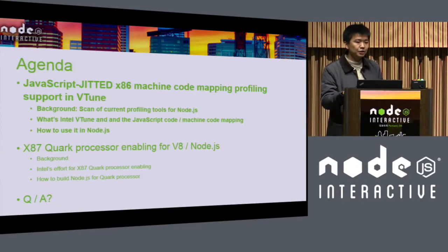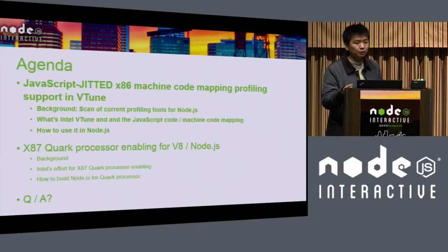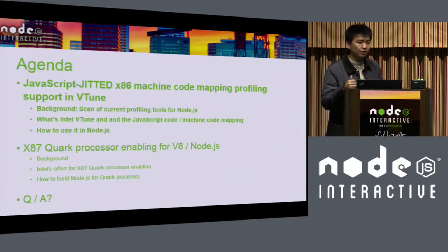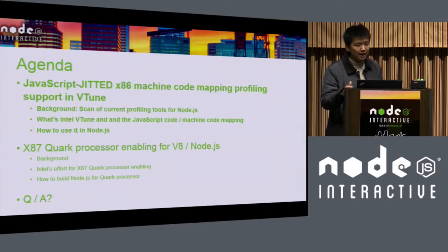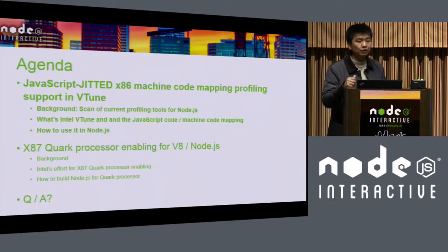First I will introduce the background of the JavaScript and JIT machine code mapping profiling on Intel architecture. I will introduce the background and then how to enable this feature step by step. For the second topic, I will also introduce the background and then tell you how to build Node.js for Quark processors.